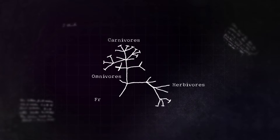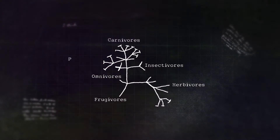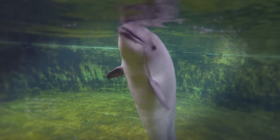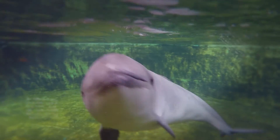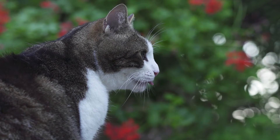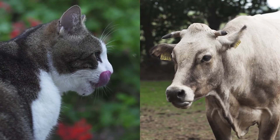Others include frugivores, who eat fruit; insectivores, who eat insects; and piscivores, such as the harbour porpoise, who eat fish. In this film we will only focus on two types of specialists: the carnivores and the herbivores.